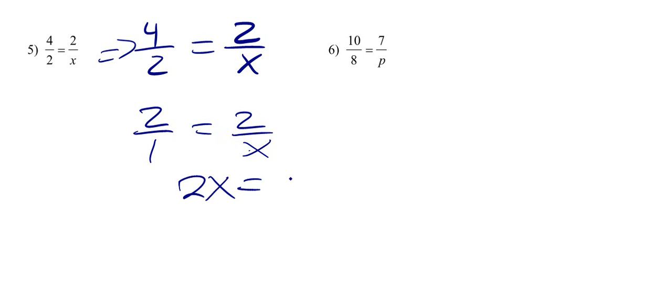So you got 2x is equal to 2. So I took this x and this 2 over here, multiplied them. I took this 1 and this 2, dividing both sides by 2. x is equal to 1.